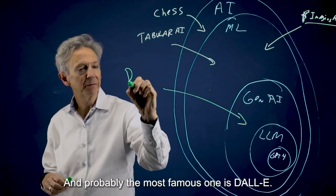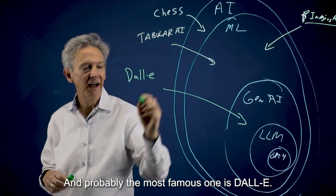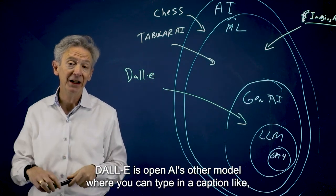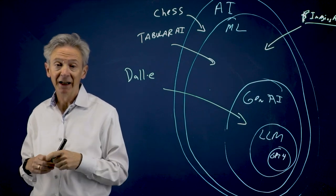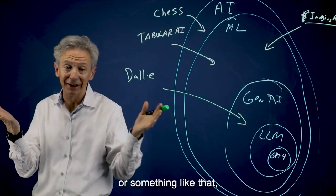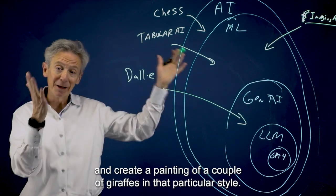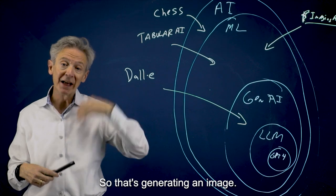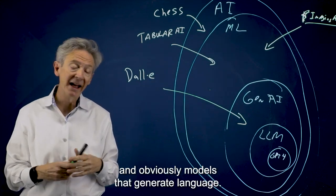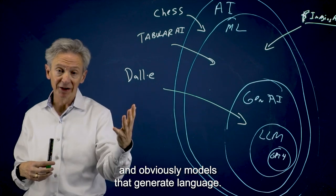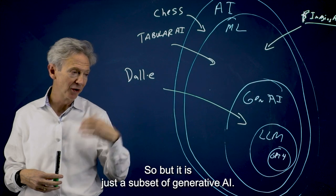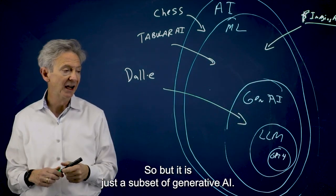And probably the most famous one is DALL-E. DALL-E is OpenAI's other model, where you can type in a caption like, show me a couple giraffes in the style of Klimt or something like that. And it'll create a painting of a couple giraffes in that particular style. So that's generating an image. There are models that generate music and obviously models that generate language. And so what's all the rage now is these large language models. But it is just a subset of generative AI.